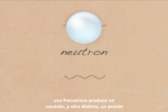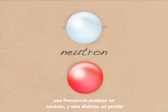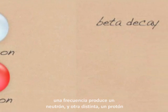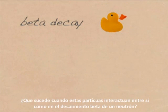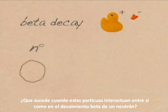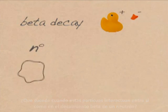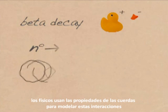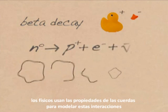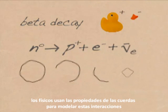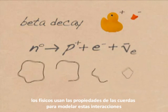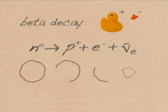One frequency produces a neutron, another a proton. What happens when these particles change or interact with each other, as in the beta decay of a neutron? Physicists use the properties of strings to model these interactions.